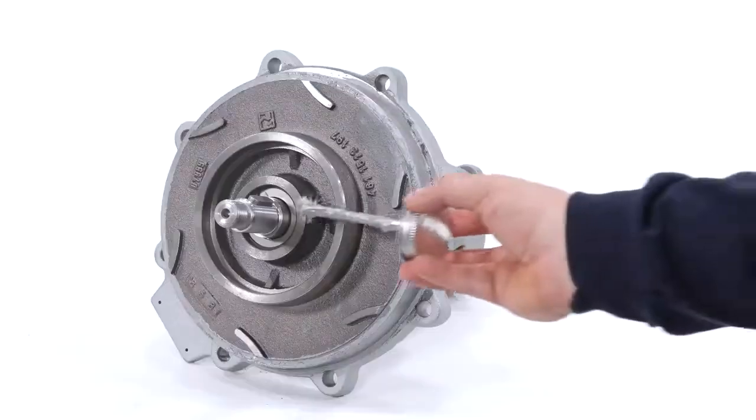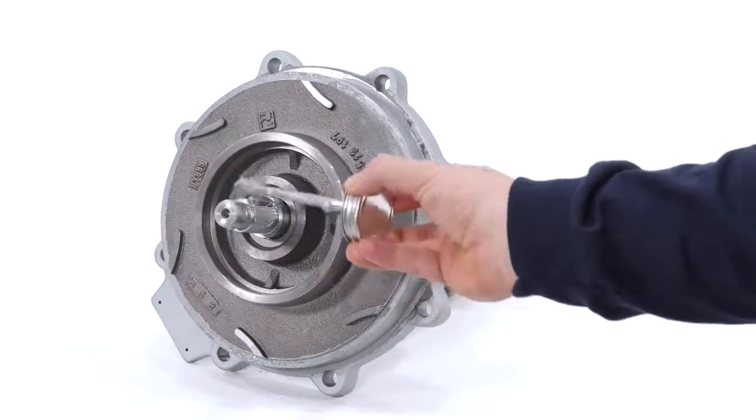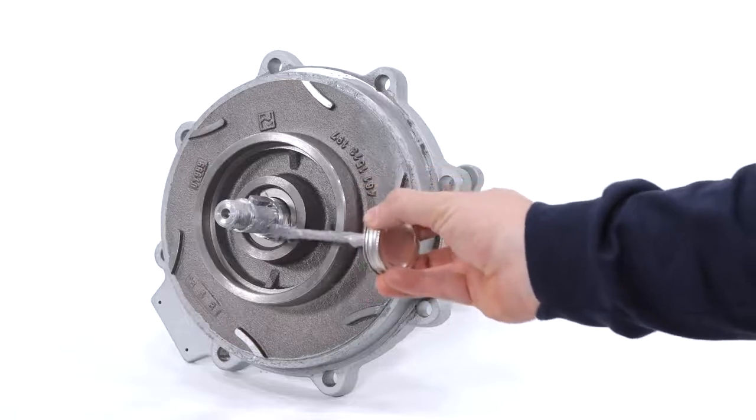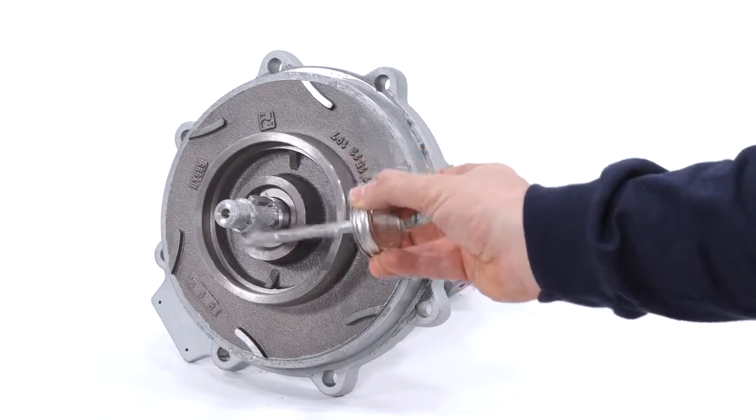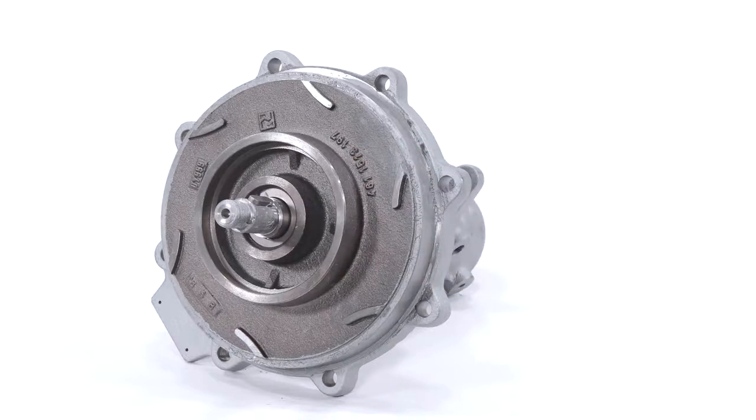We recommend that you apply an anti-seize lubricant to the drive shaft before installing the impeller. Other areas we recommend to use anti-seize lubricant are the mating surfaces of the casing and casing cover as well as both sides of the case gasket.